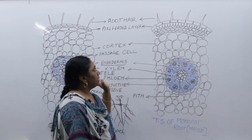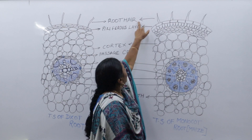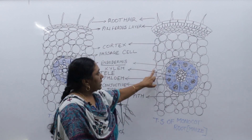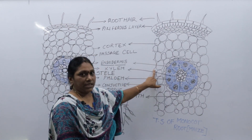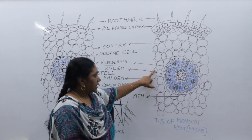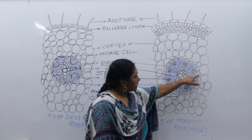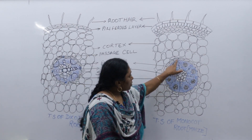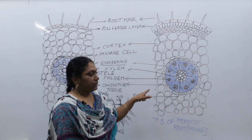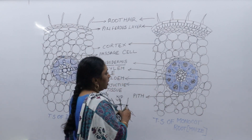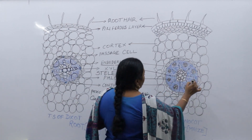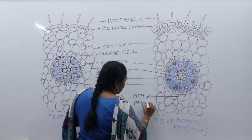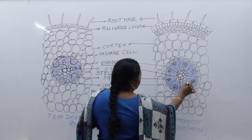In monocot root, the outer layer is again the piliferous layer from where root hairs come. There is a large multi-layered cortex region made up of thin-walled parenchyma cells. After the cortex, we have the endodermis as the first inner layer, then the pericycle. In monocot root, many xylems can be found, so the arrangement is polyarch — poly means many.